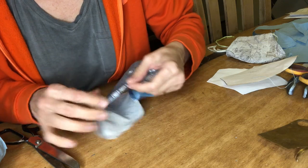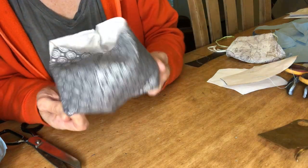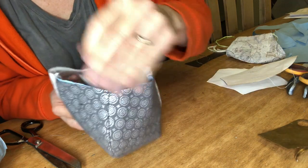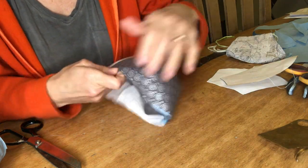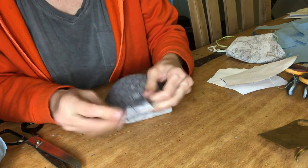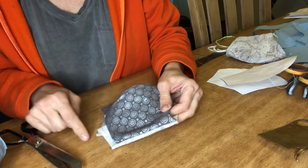Sew all the way around that edge on both openings, all the way around. And then we're going to build a channel in where that cord is going to go.